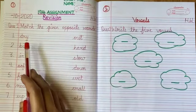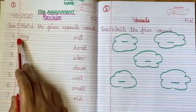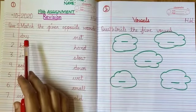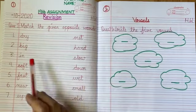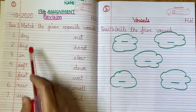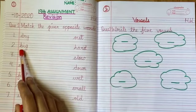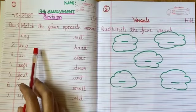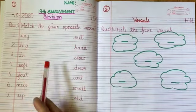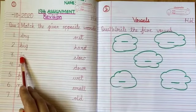Number one: D-R-Y, dry. What is the opposite of dry? W-E-T, wet. Match dry with wet. Number two: B-I-G, big. The opposite is small. Match big with small. Number three: I-N, in. The opposite is out.